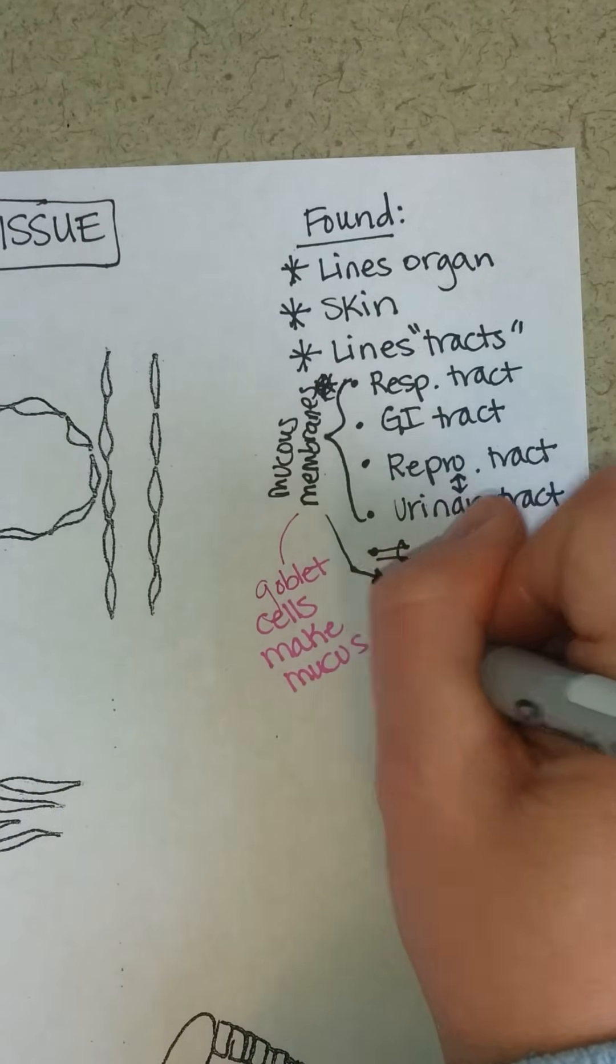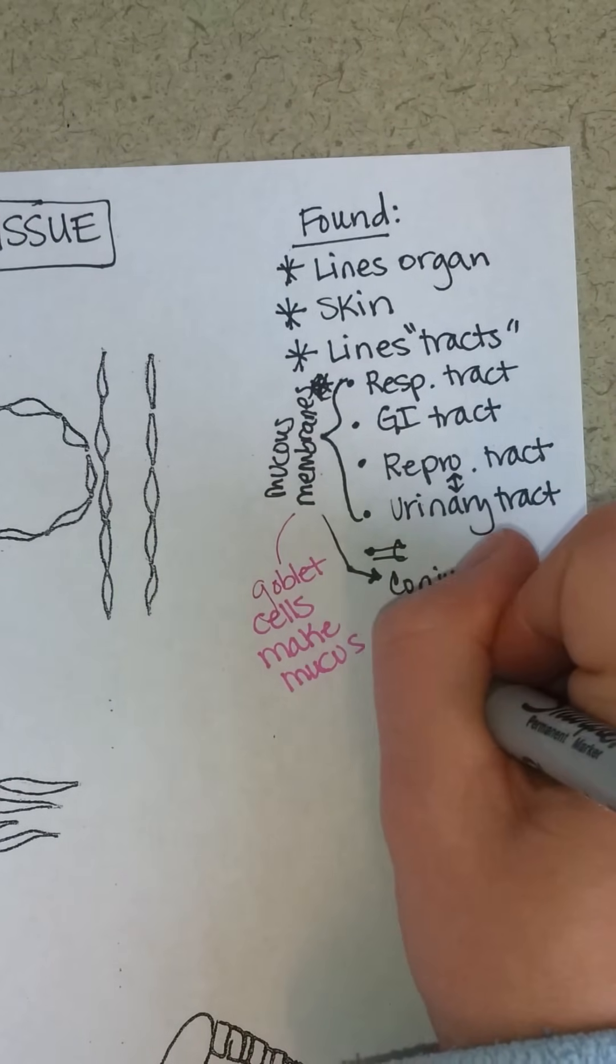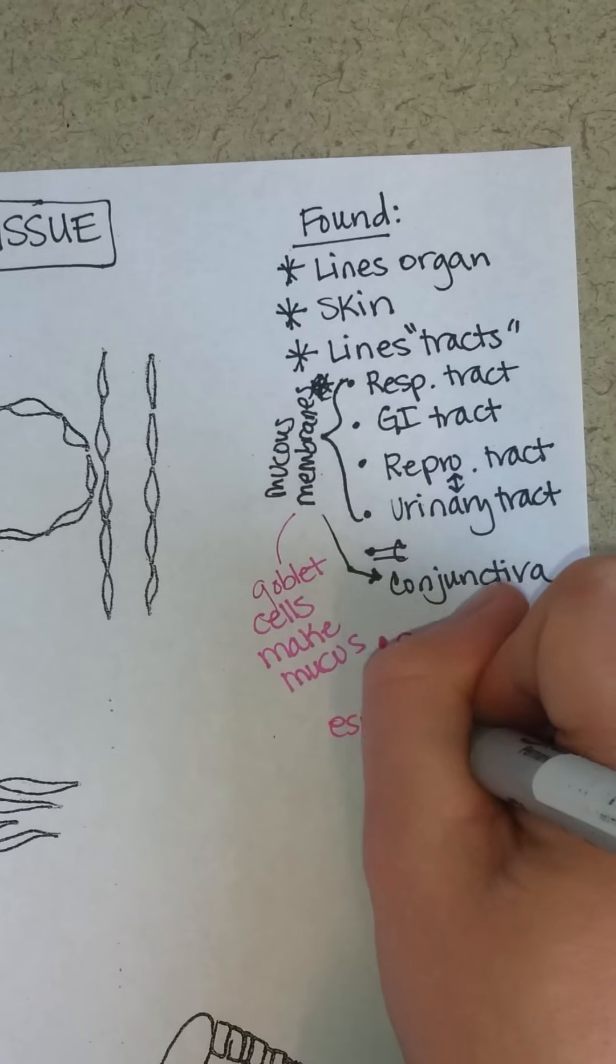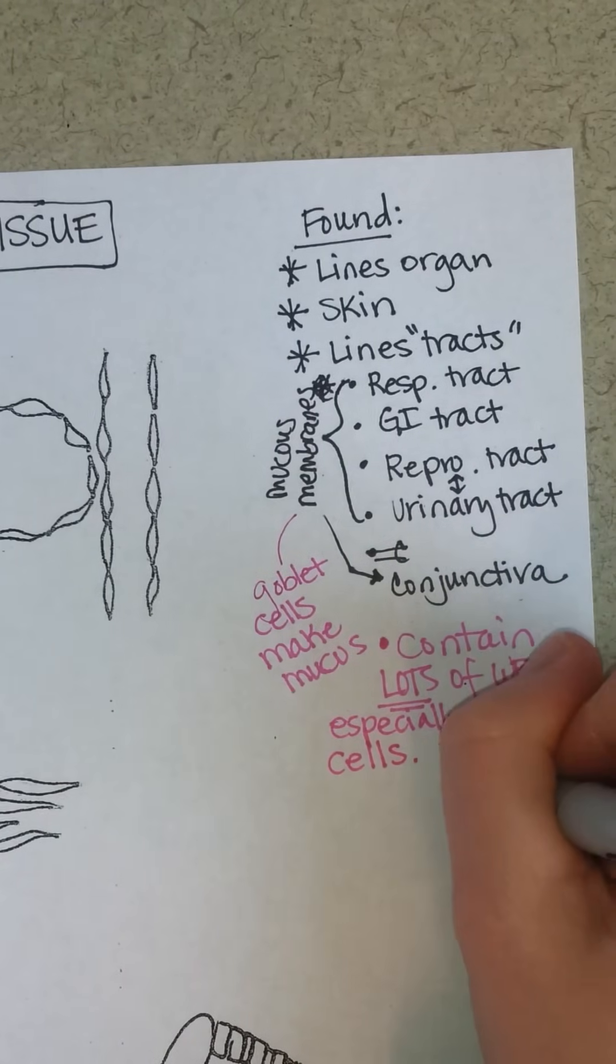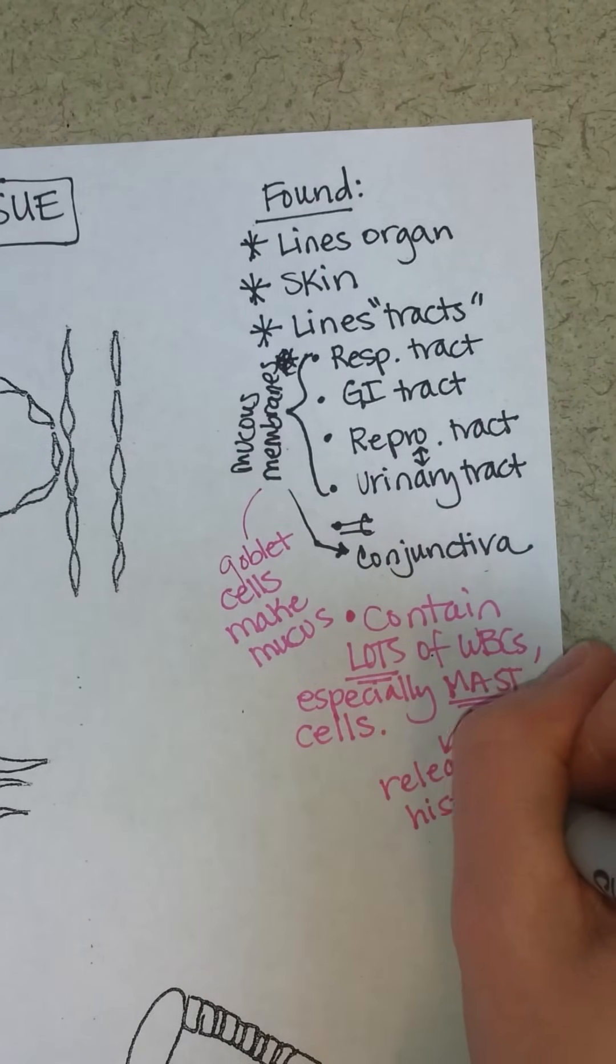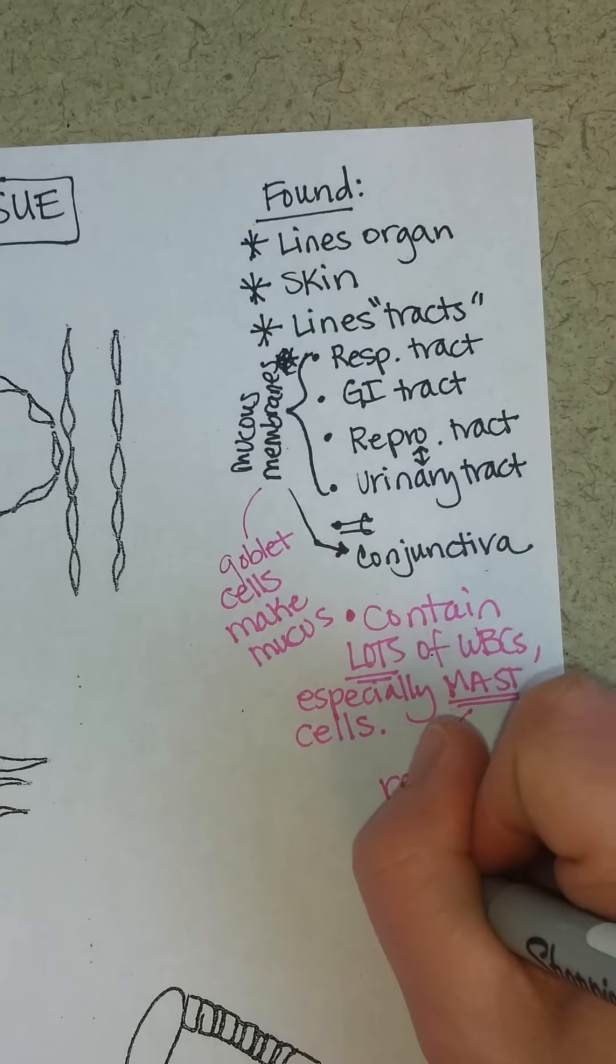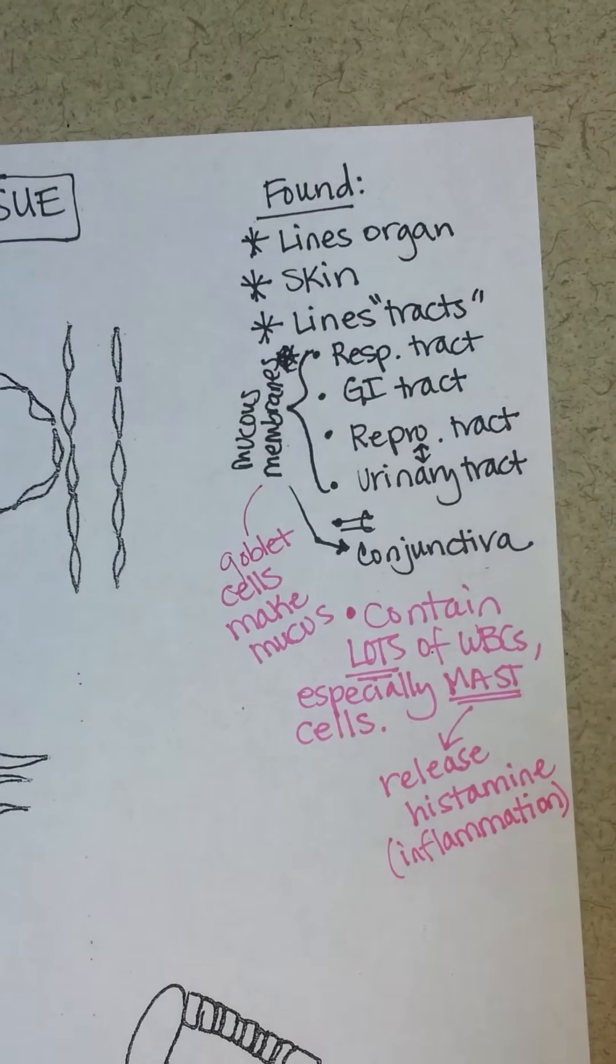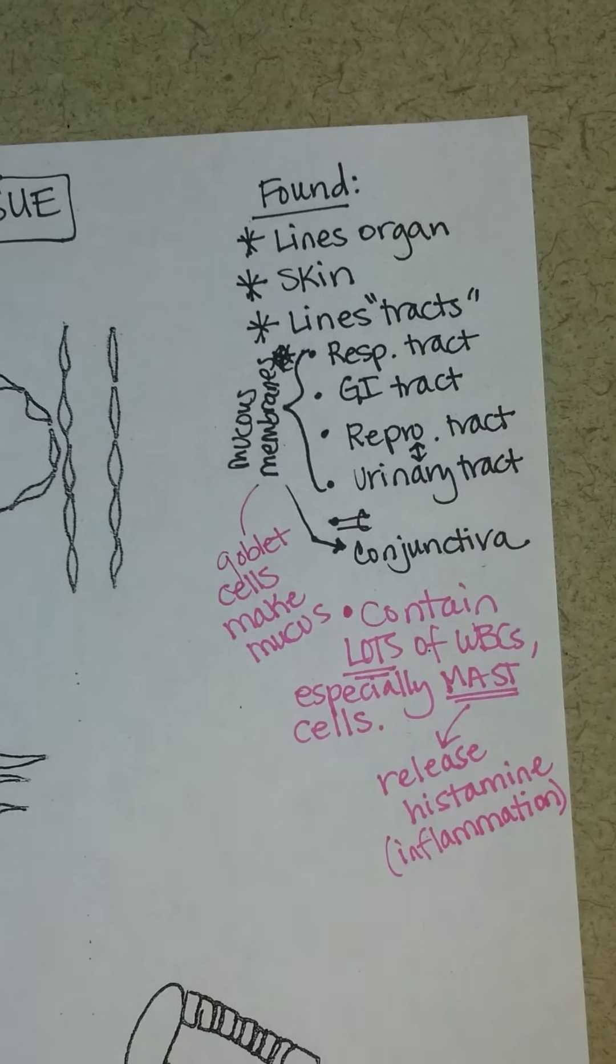All mucous membranes contain lots of white blood cells, especially a kind of white blood cell known as a mast cell. Mast cells release histamine. If you've ever taken an antihistamine, histamine is going to cause inflammation. It means an area will become red, hot, swollen, and possibly more painful.